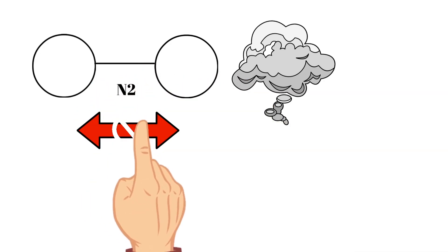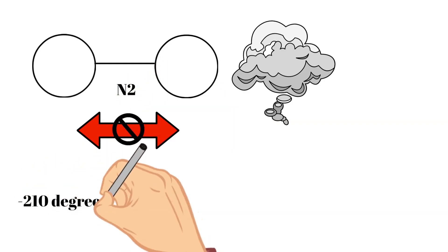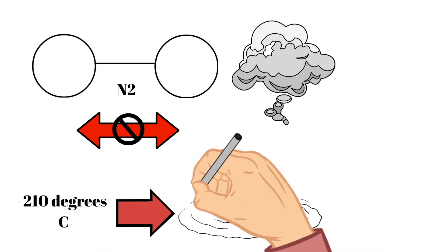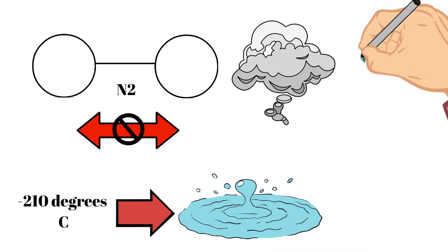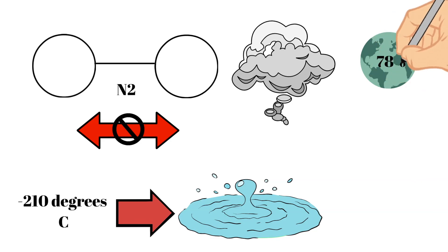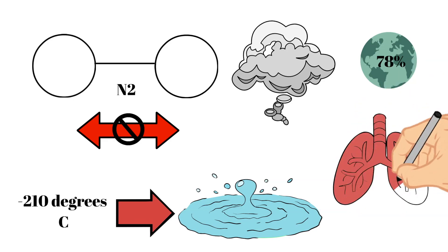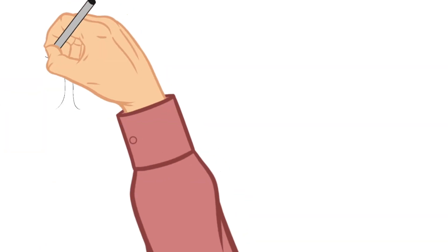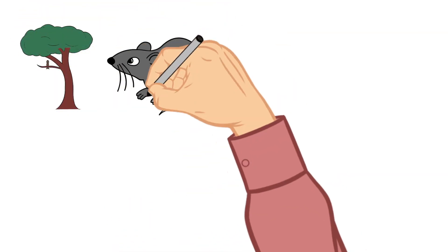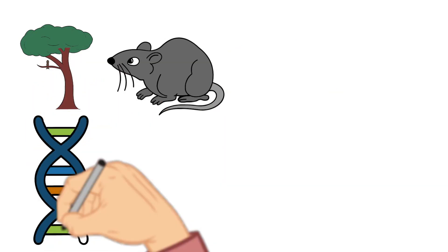Nitrogen is a liquid at negative 210 degrees Celsius, and if you were to look at liquid nitrogen it would look exactly like water. The earth's atmosphere is 78% nitrogen gas, which is interesting because we often say we are breathing air or oxygen and don't say we are breathing nitrogen. Nitrogen is also found in all living organisms on earth — plants and animals — and plays an important part in the formation of proteins and nucleic acids.